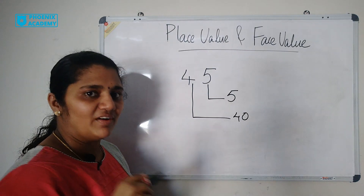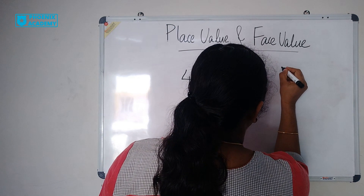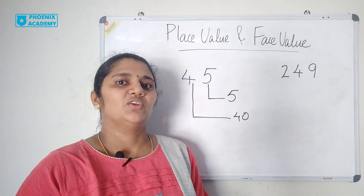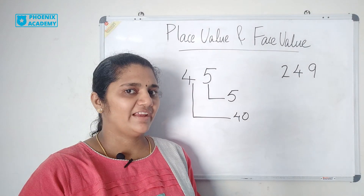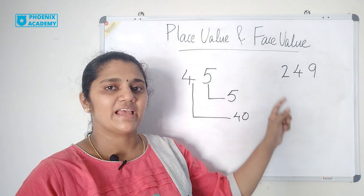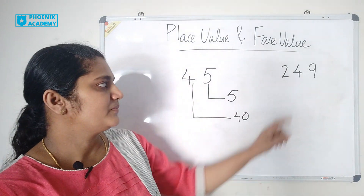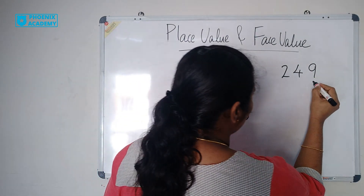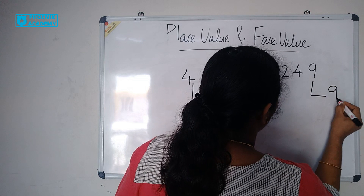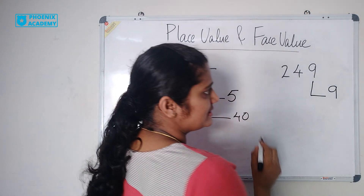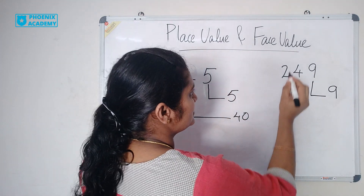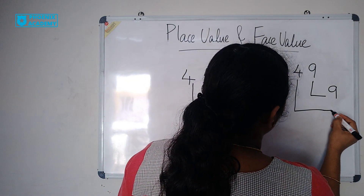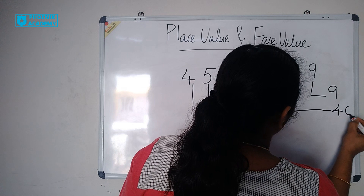Let us see one more example. 249 is 9 ones, 4 tens and 2 hundreds. 9 is in ones position, so place value of 9 is 9. 4 is in tens position, so place value of 4 is 4 tens — that is 40.